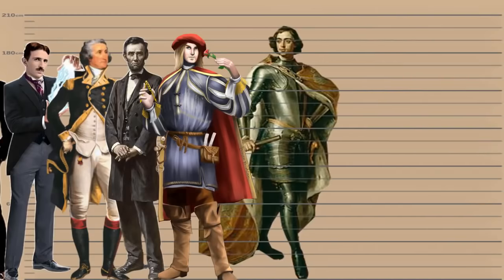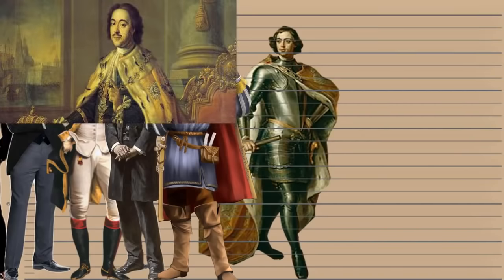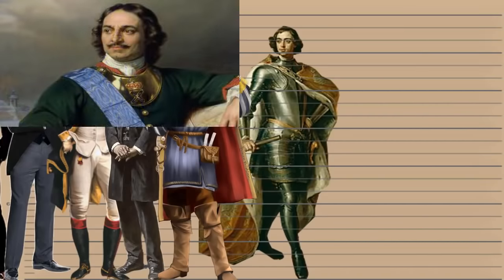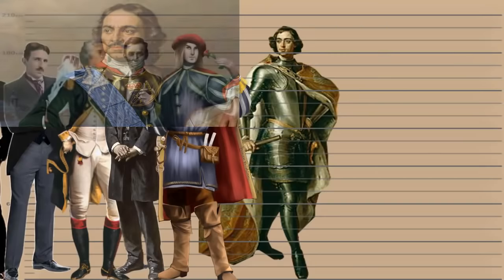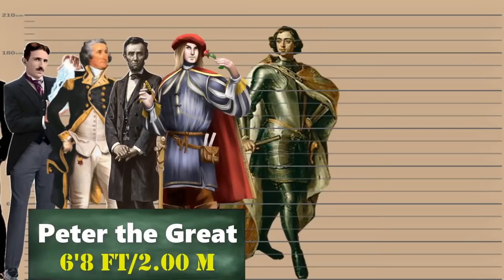Lastly, known for introducing political and social reforms that helped Russia become an international power player while stripping away some of the cultural and religious traditions that set Russia apart from the rest of Europe — Peter the Great was historically known for being as tall as 6 feet 8 inches.